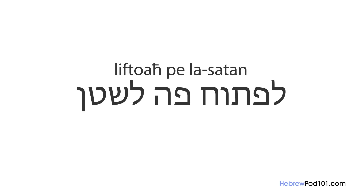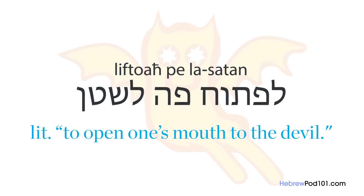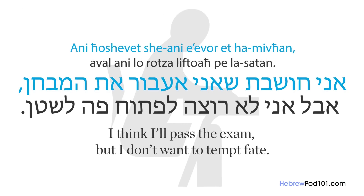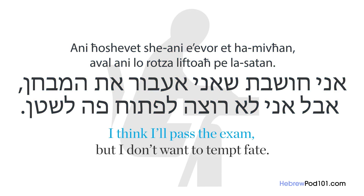The next idiom has to do with superstition: 'liftoch peh l'satan,' literally meaning 'to open one's mouth to the devil.' It originated from the Jewish prohibition against saying bad things about yourself or other people. Today it's used like 'don't tempt fate' — don't say good things because you might jinx your luck. For example: I think I'll pass the exam, but I don't want to tempt fate.